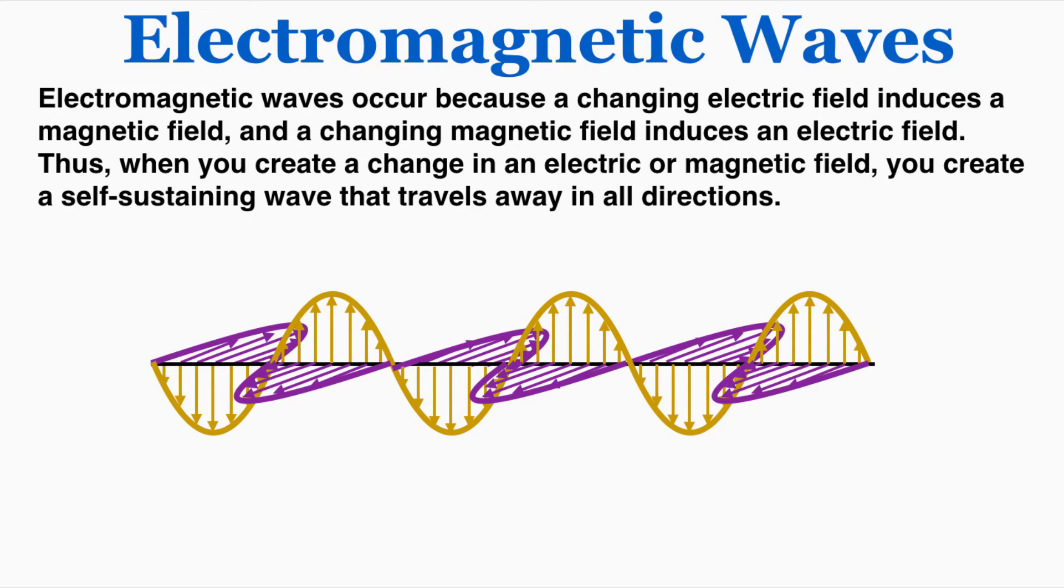Electromagnetic waves occur because a changing electric field actually induces a magnetic field, and a changing magnetic field induces an electric field. So because you have a changing electric field a magnetic field is induced, it's created, and because it's created it's changed, and so the changing magnetic field also changes the electric field. So that's why these can oscillate on and on forever. When you create a change in an electric or magnetic field you create a self-sustaining wave that travels away in all directions.